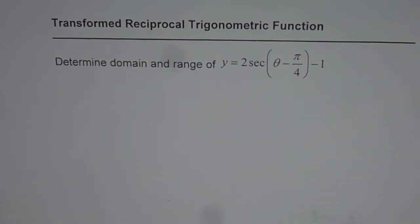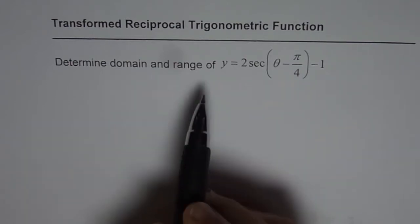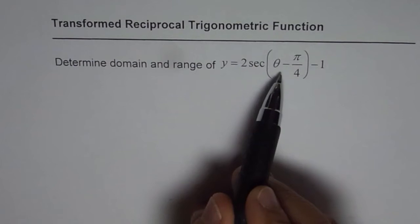I'm Anil Kumar and in this video I'll share with you the easiest way of finding domain and range for reciprocal trigonometric functions. We have taken as an example y equals 2 secant of theta minus pi by 4, minus 1.